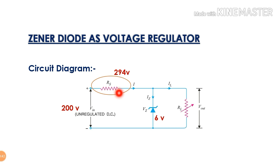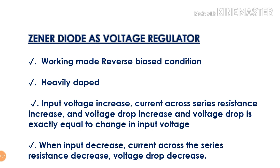This is the Zener diode working — it is the mechanism. This is for board exams. The Zener diode works in reverse biasing condition. This is the voltage regulation: irregular voltage becomes regular voltage. Irregular voltage is the variable input voltage. Regular voltage is the constant output voltage. That's why we are using the Zener diode as a voltage regulator.